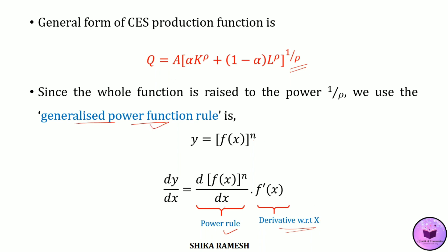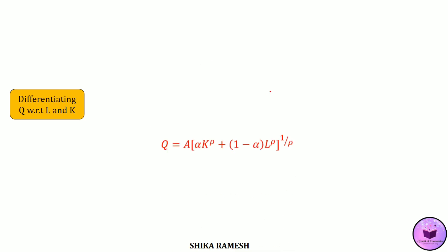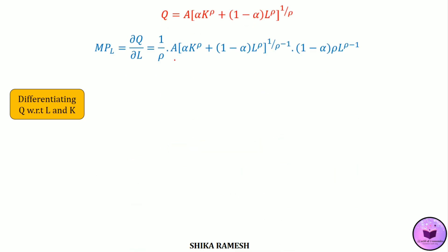Using the generalized power function rule, we need to differentiate q with respect to labor and capital. So del q by del l will be 1 by rho multiplied by a times alpha k raised to rho plus 1 minus alpha l raised to rho, the whole raised to 1 by rho minus 1, multiplied by 1 minus alpha times rho times l raised to rho minus 1. Here we have taken the inner expression as x raised to n and applied the power rule to get this term, and for the second term we differentiated with respect to labor.